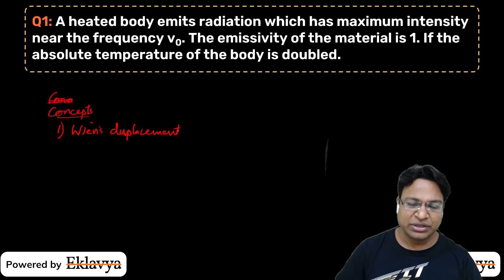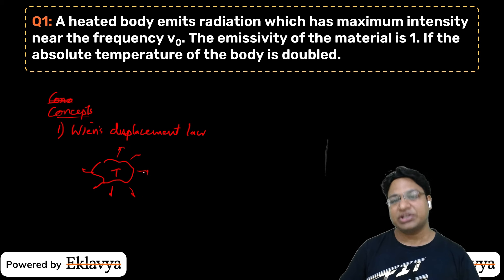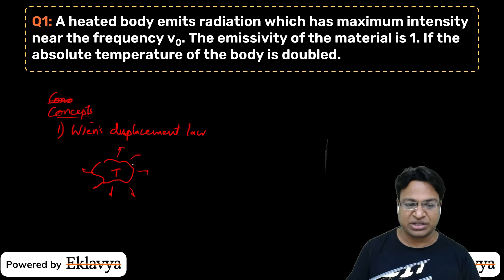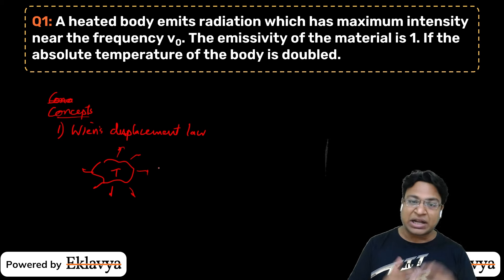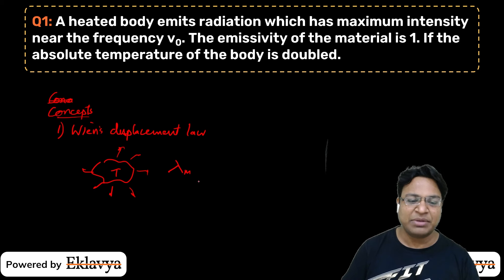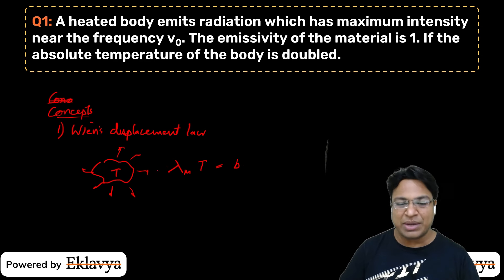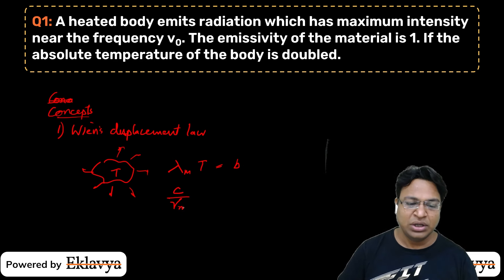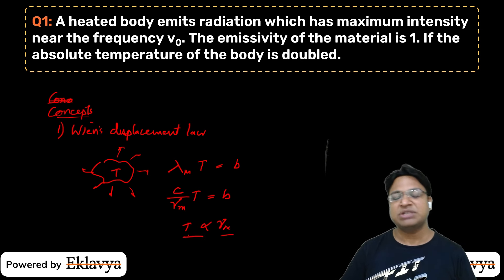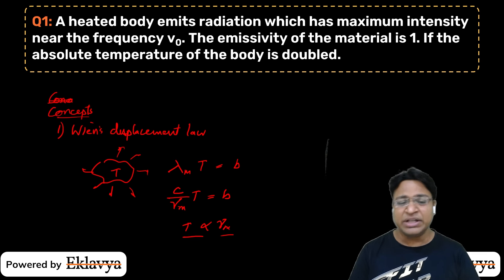Wien's Displacement Law says: if there is a body which emits radiation and the body temperature is T, the radiation with maximum contribution of energy — this radiation is polychromatic, so in this polychromatic beam there are different wavelengths. The wavelength with maximum energy contribution we call λₘ. The product λₘ × T is a constant value — we call it Wien's constant. We can write it as λₘ = C/ν, so T is proportional to frequency. The frequency at which we get maximum radiation is proportional to temperature.